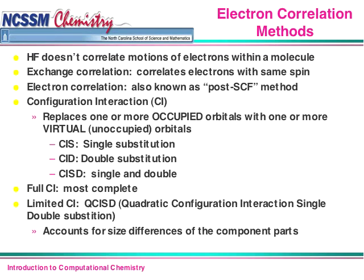One of the problems with HF, briefly, is it doesn't do a good job of understanding how electrons are moving — and that's a problem. It also doesn't deal well with the fact that electrons have a spin: spin up and spin down. There's a variety of things HF doesn't do very well, which is why we use other methods like MP and CI to fix some of this.